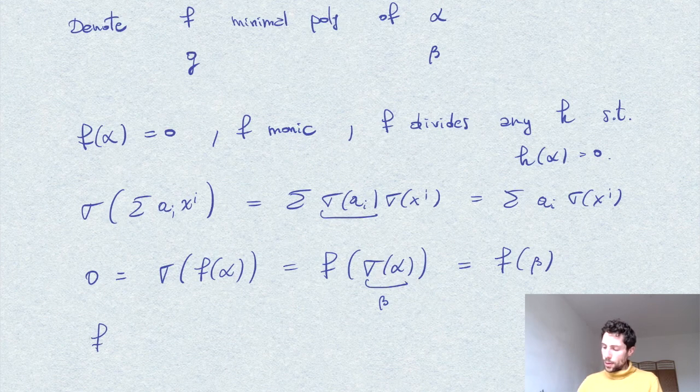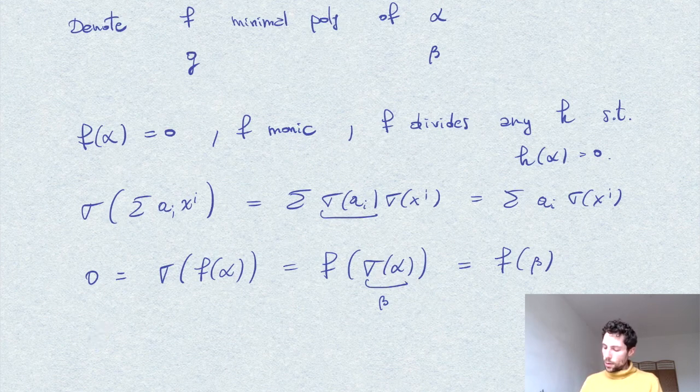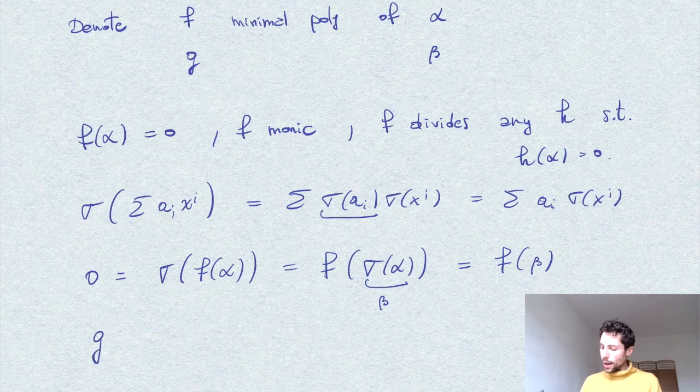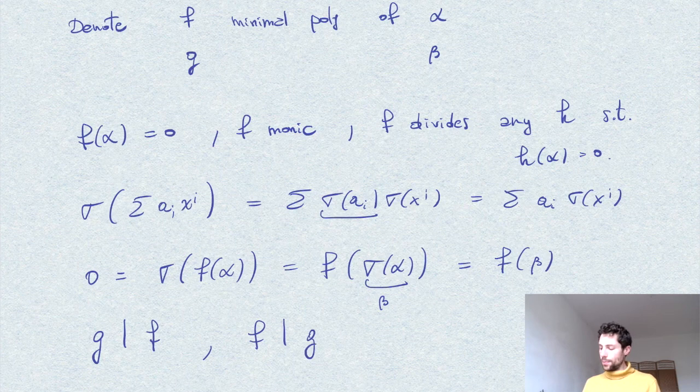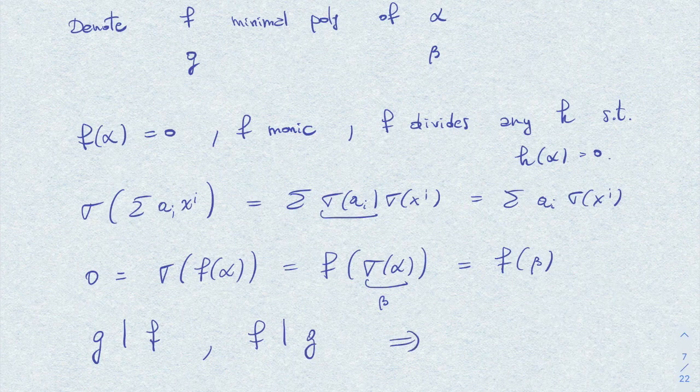By this we see that g divides f, but also from the symmetrical situation with g, we see that f divides g. Since we are dealing with monic polynomials, this implies that f is equal to g.